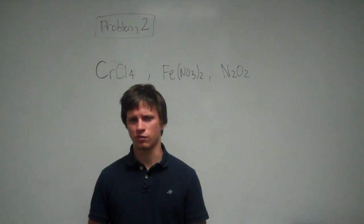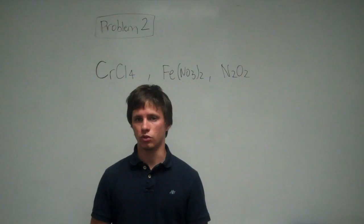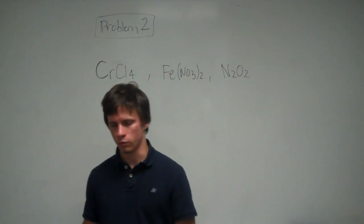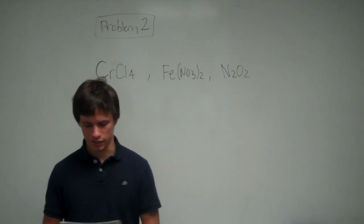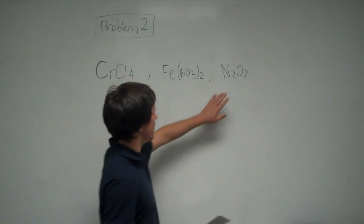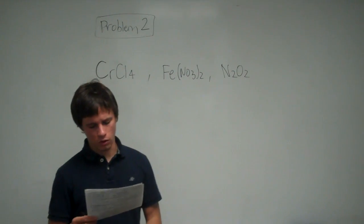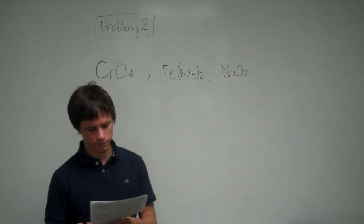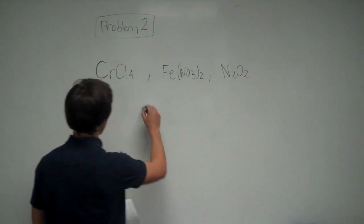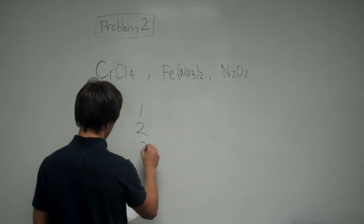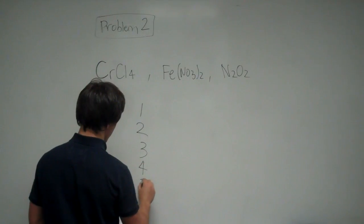So when you're writing the names of compounds with transition metals, you usually have to put a Roman numeral in the name. Whereas N2O2, nitrogen and oxide, are not transition metals, so you don't need to indicate the oxidation state.